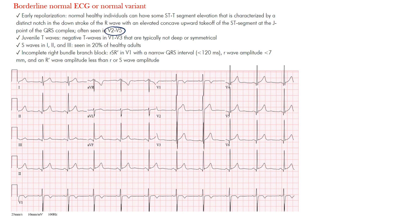We tend to see early repolarization in the precordial leads — V2, V3, V4, and V5 — with V2 and V3 being most common. You can see some ST segment elevation and that notching we discussed: the fishhook pattern seen with benign early repolarization. There is a distinct notch in the downstroke of the R-wave, followed by an elevated concave upward takeoff of the ST segment.